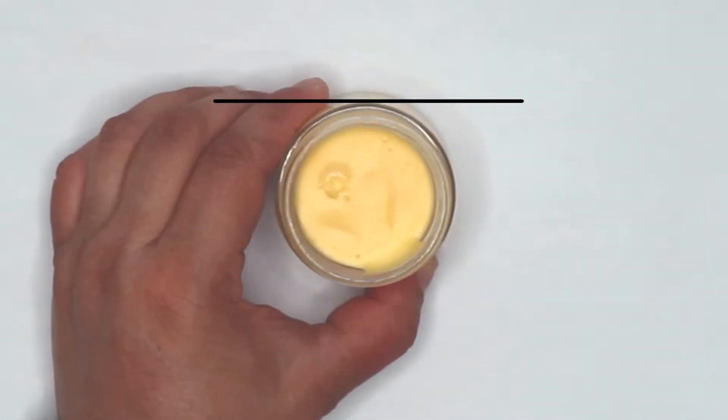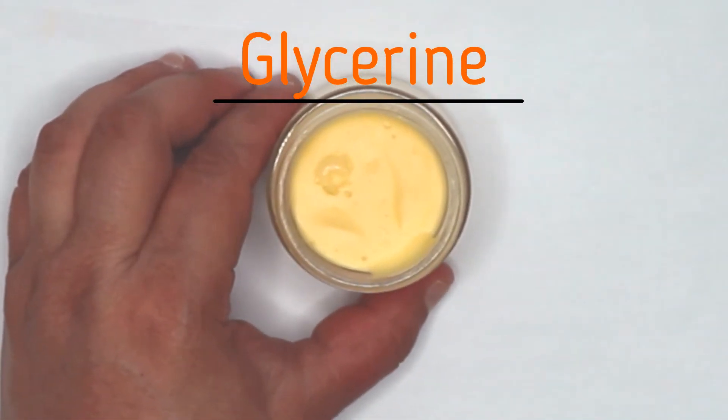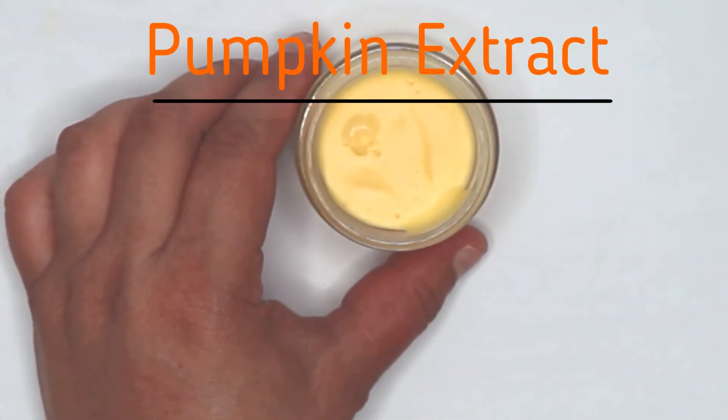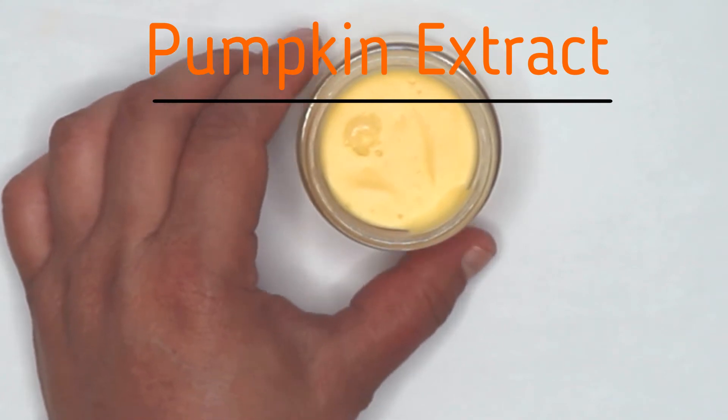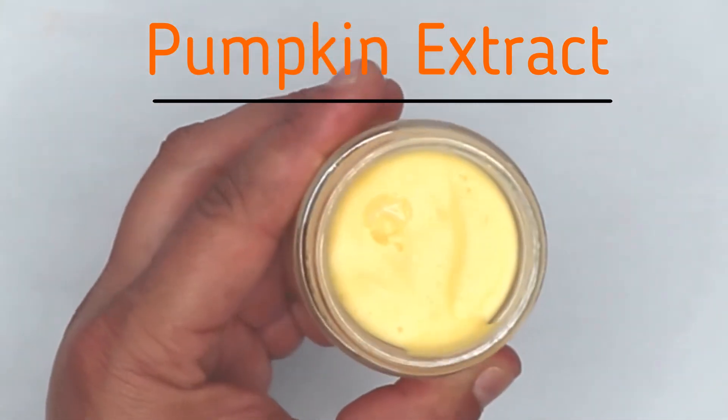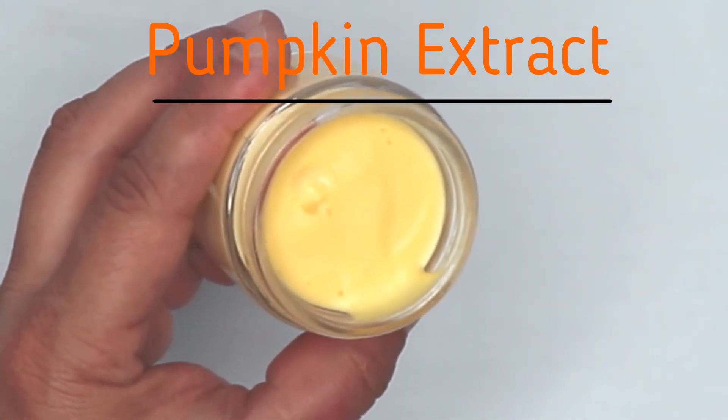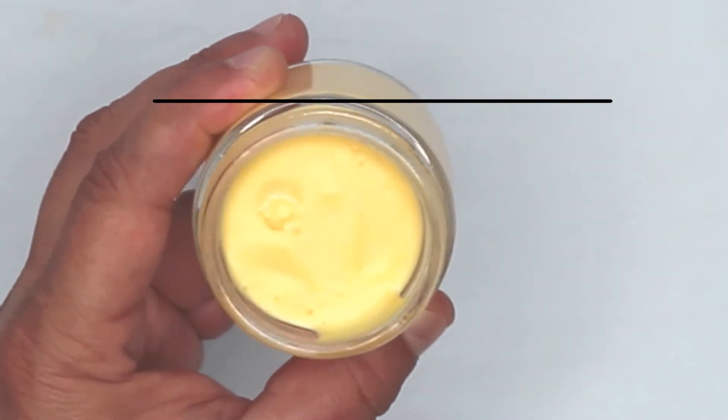The exfoliant face mask has glycerin which is a great humectant, pumpkin extract which is packed with vitamins and minerals and soothes and moisturizes the skin that provide a natural pumpkin scent. It can also act as an accelerator helping the skin to absorb nutrients quickly.